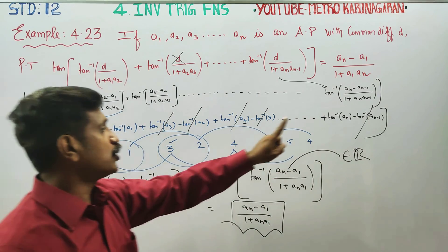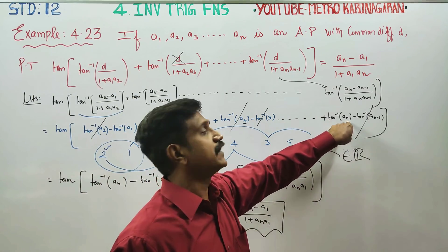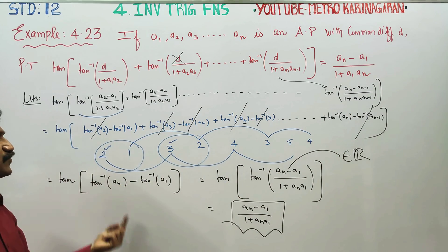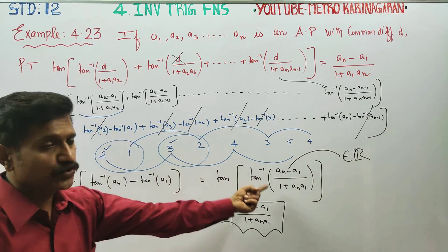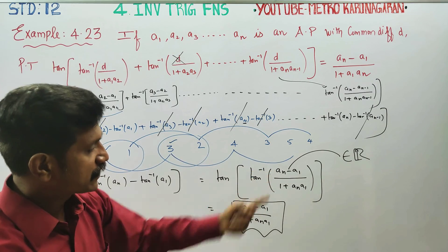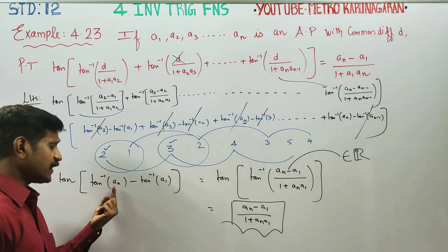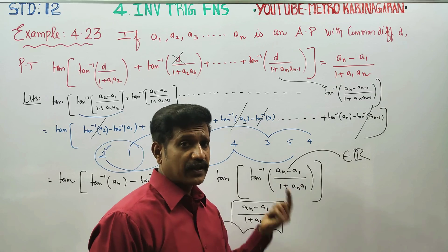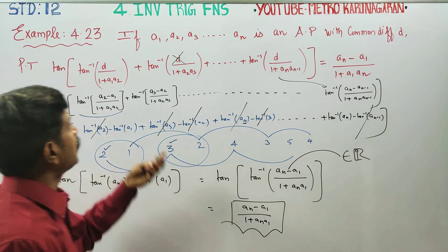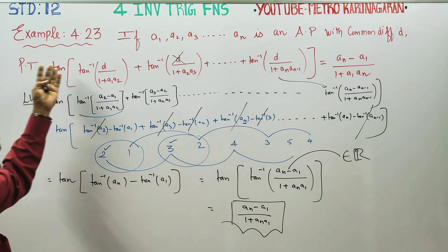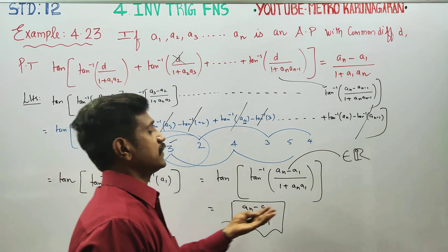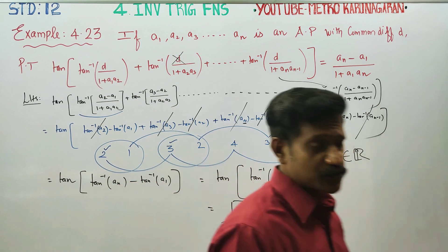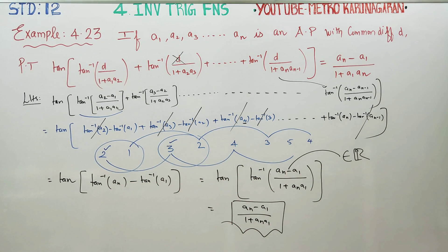In this technique, all middle terms are cancelled — negative and positive — leaving the biggest term aₙ and the smallest a1. We check the condition x·y less than 1 and use the formula directly. Okay, thank you.